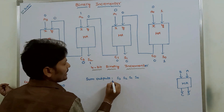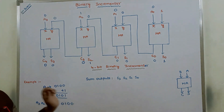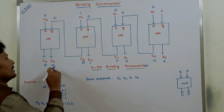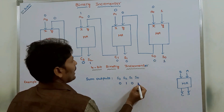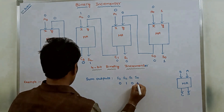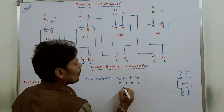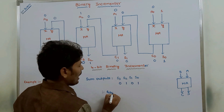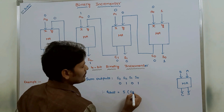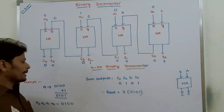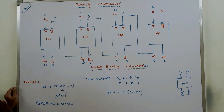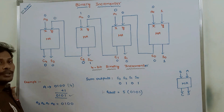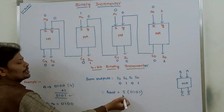The final output sum bits starting with S0 and ending with S3 are: S3=0, S2=1, S1=0, S0=1. That is 0101 in binary. The decimal equivalent is 5. So the binary incrementer added 1 to the value 0100 stored in register A and produced 0101, whose decimal equivalent is 5.